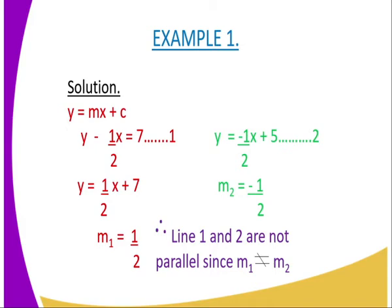What you are supposed to do is write the equation of a straight line in the form y equals mx plus c. In the first equation, after transforming it into the equation of a straight line, it reads y equals half x plus 7. Therefore, gradient 1 becomes 1 over 2.